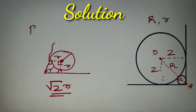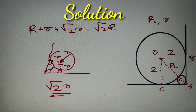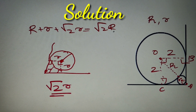So the total length OA equals R plus r plus root 2 r. Now, if we consider points O, B, A, and C, then OBAC is a square because all angles are 90 degrees. The side of this square is capital R, so the diagonal OA equals root 2 times capital R. Therefore, we have the equation: R plus r plus root 2 r equals root 2 R.